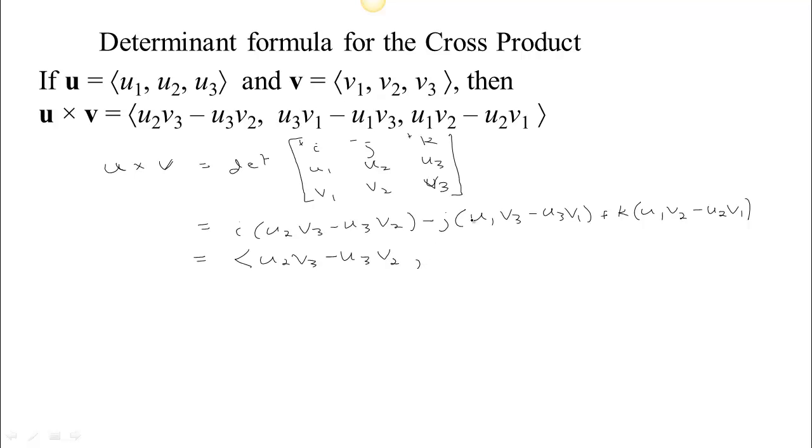And then the second entry, oh, that looks different. Remember, because j was in a negative position, there's a negative here that needs to go through. So if I distribute that negative, I get plus u₃v₁ minus u₁v₃. And then finally the k term, u₁v₂ minus u₂v₁.